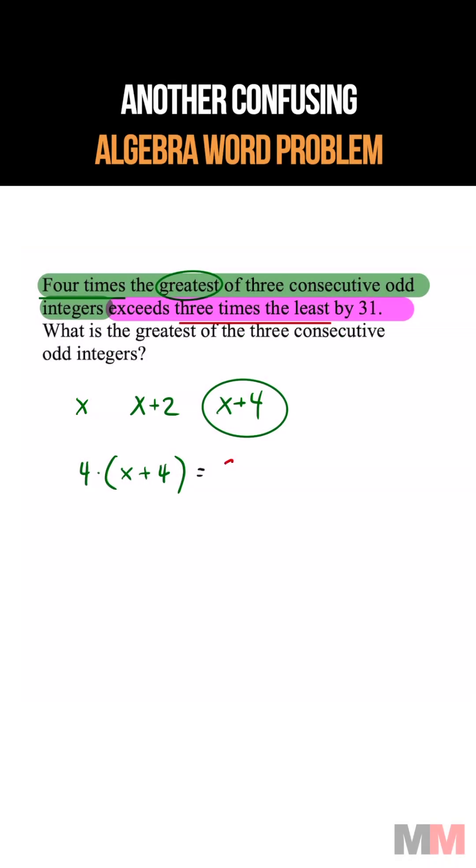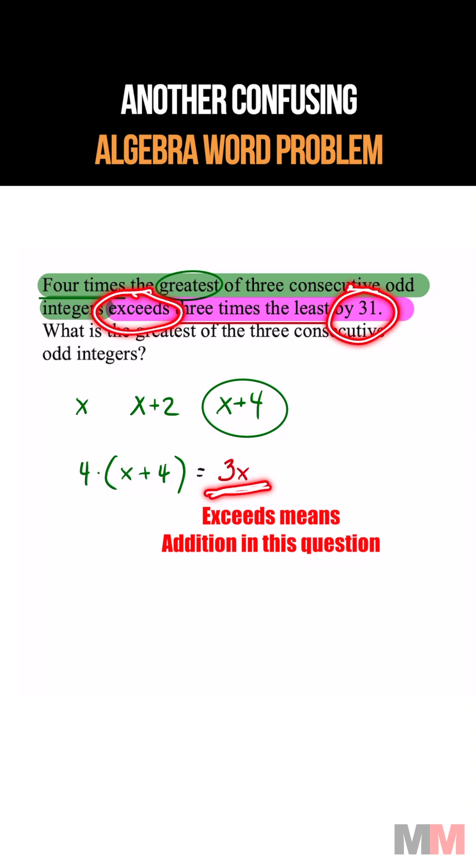So three times that amount is written as 3x, and that expression exceeds it by 31. So that word 'exceeds' represents plus.